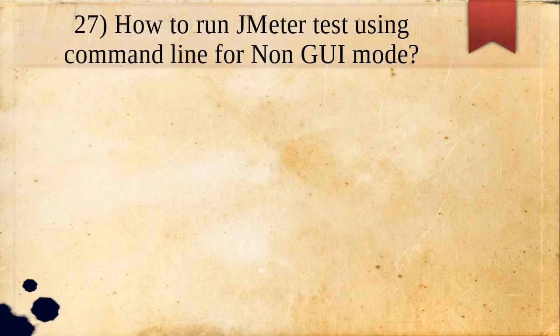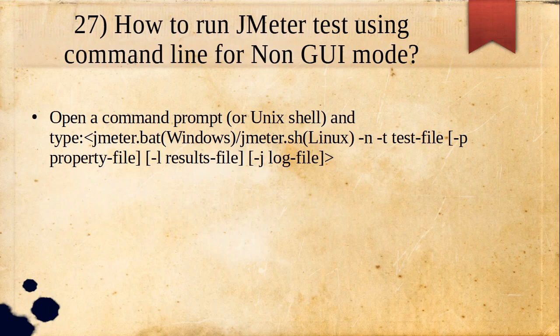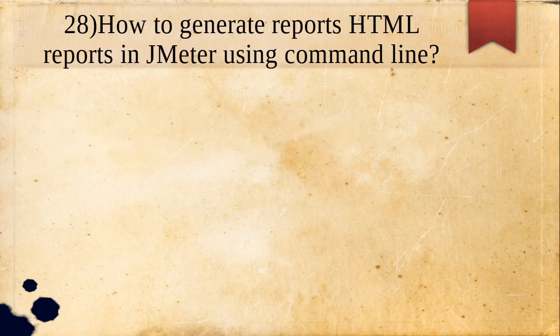How do you run a JMeter test using the command line in non-GUI mode? Open the command prompt and type: jmeter.bat -n (for non-GUI) -t followed by the location of the test file, -p if you need a property file, -l followed by the location where you want to save the results, and -j followed by the log file location.